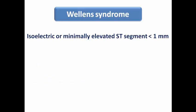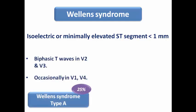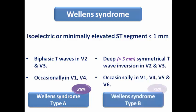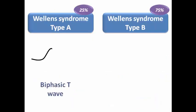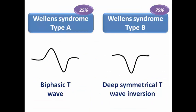In Wellens' syndrome, we usually see either isoelectric or minimally elevated ST segment with less than one millimeter, so it is not categorized as STEMI. We can see biphasic T-wave mostly in V2 and V3, and may occasionally appear in V1 and V4 — this is called Wellens' syndrome type A, comprising about 25% of cases. The deep symmetrical T-wave inversion greater than five millimeters, most prominent in V2 and V3 but may appear in V1, V4, V5, and V6, is called Wellens' syndrome type B, occurring in the majority of cases at up to 75%.